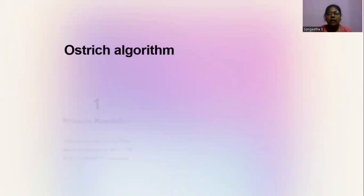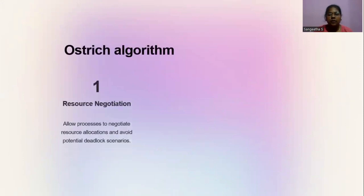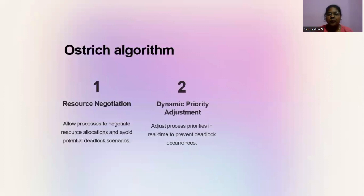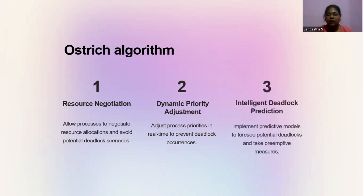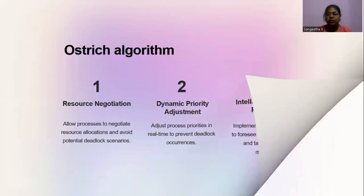Ostrich algorithm. Resource negotiation: allow processes to negotiate resource allocations and avoid potential deadlock scenarios. Dynamic priority adjustment: adjust process priorities in real time to prevent deadlock occurrences. Intelligent deadlock prediction: implement predictive models to foresee potential deadlocks and take preemptive measures.